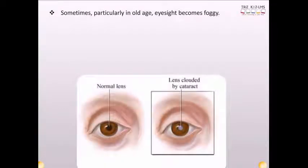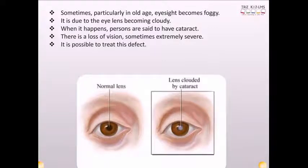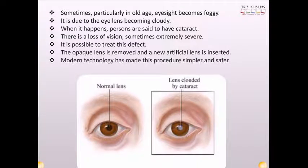Sometimes, particularly in old age, eyesight becomes foggy. It is due to the eye lens becoming cloudy. When it happens, persons are said to have cataract. There is a loss of vision, sometimes extremely severe. It is possible to treat this defect. The opaque lens is removed and a new artificial lens is inserted. Modern technology has made this procedure simpler and safer.